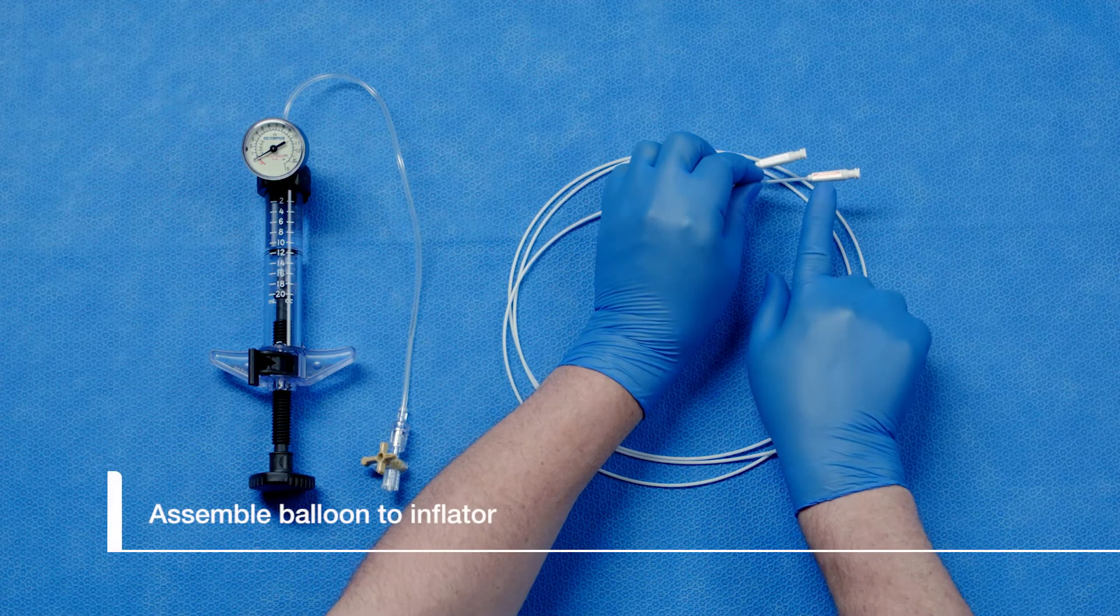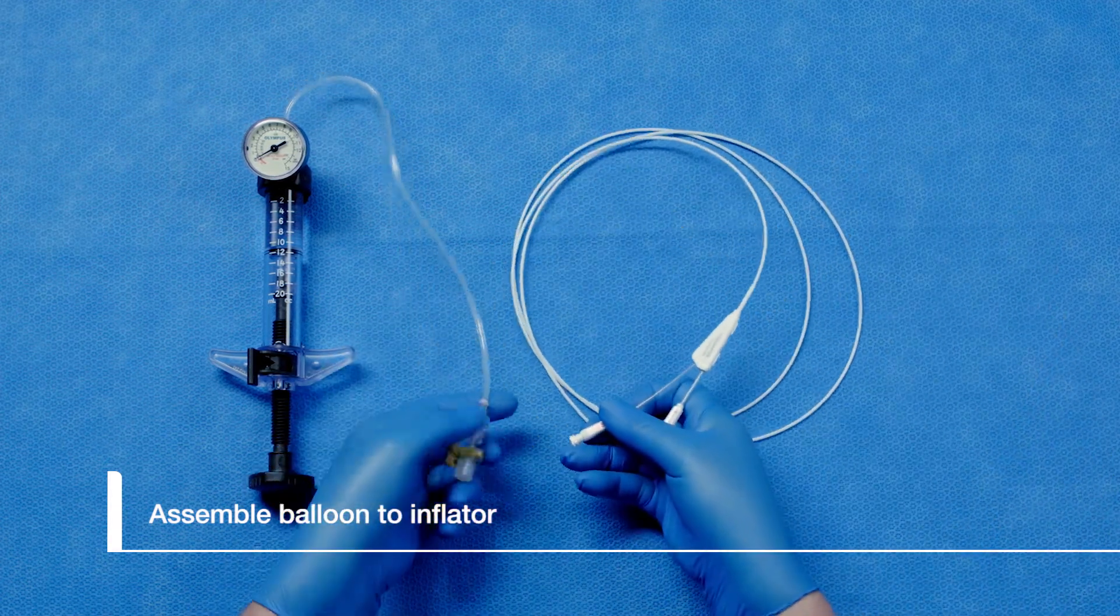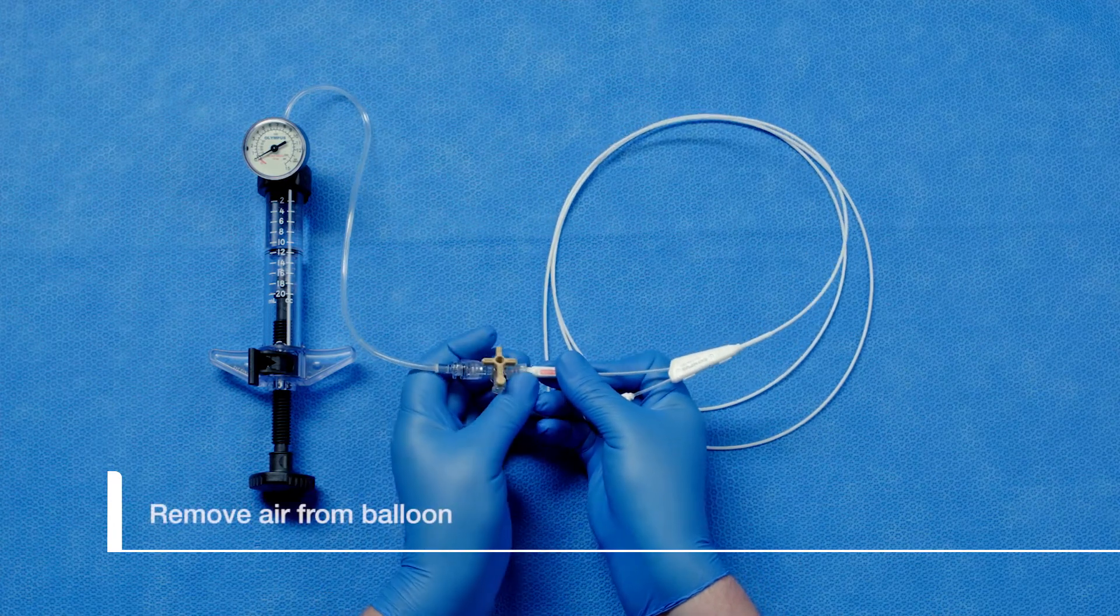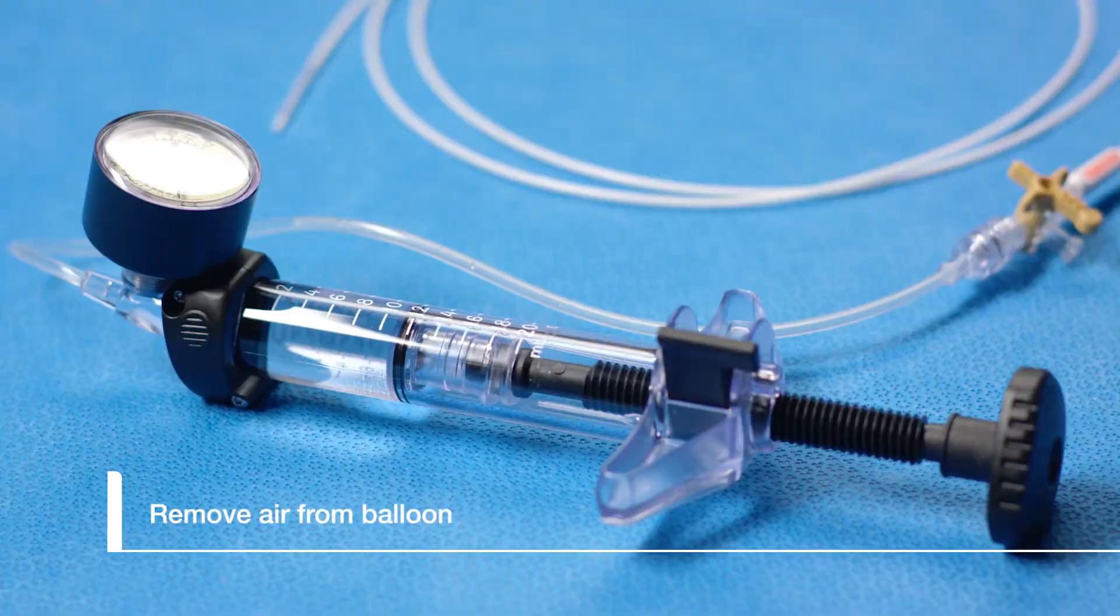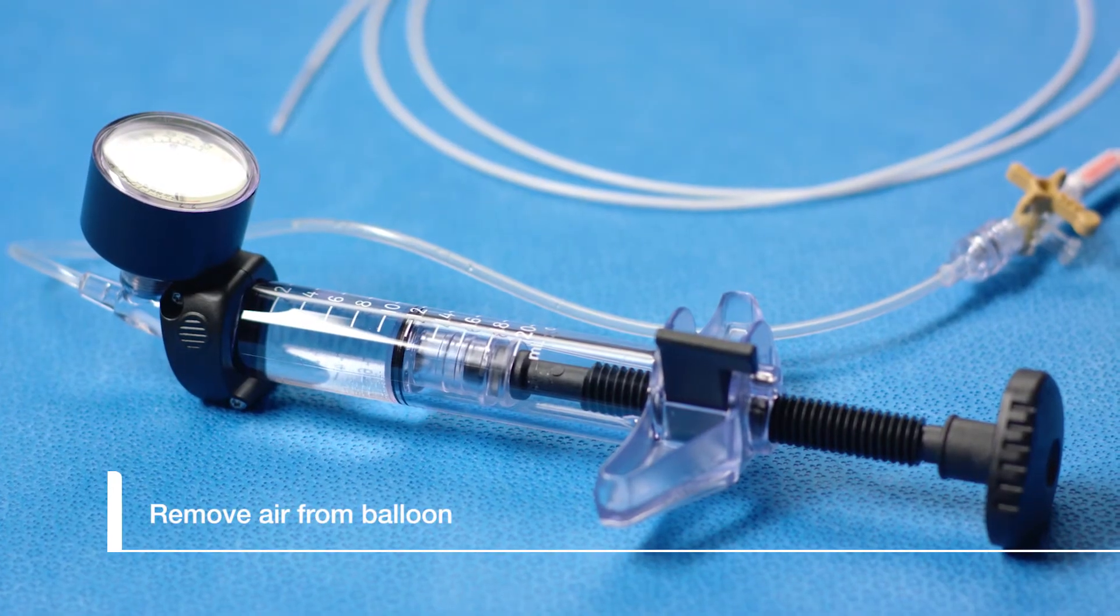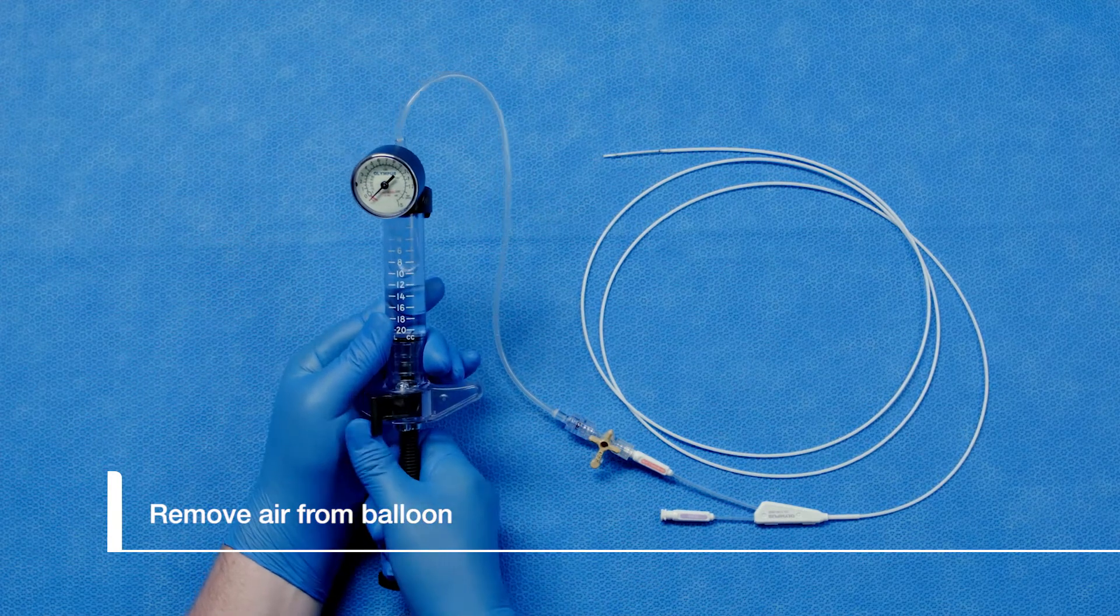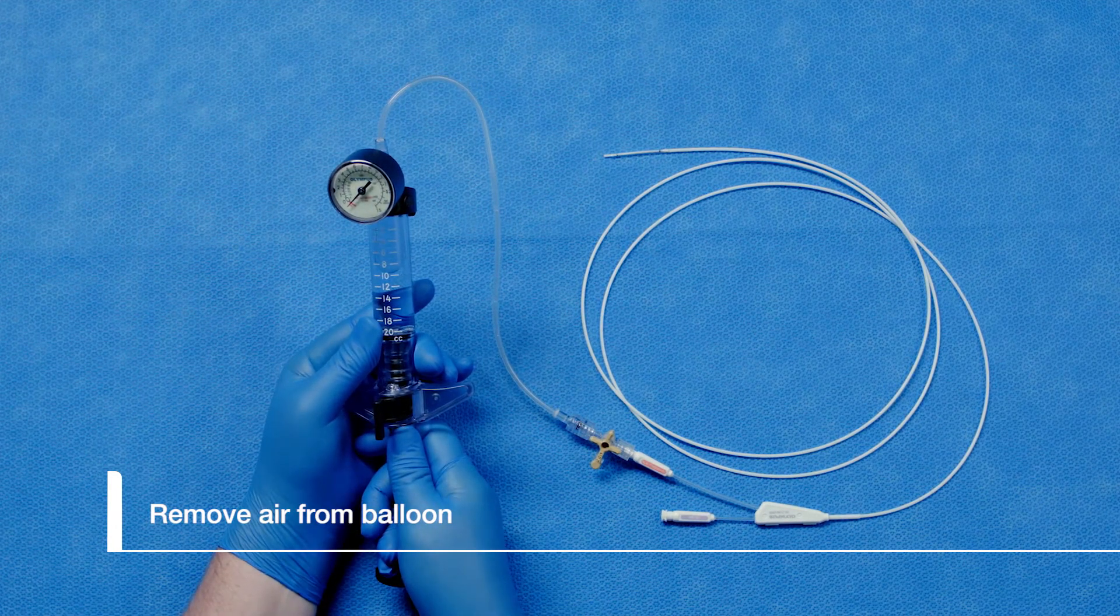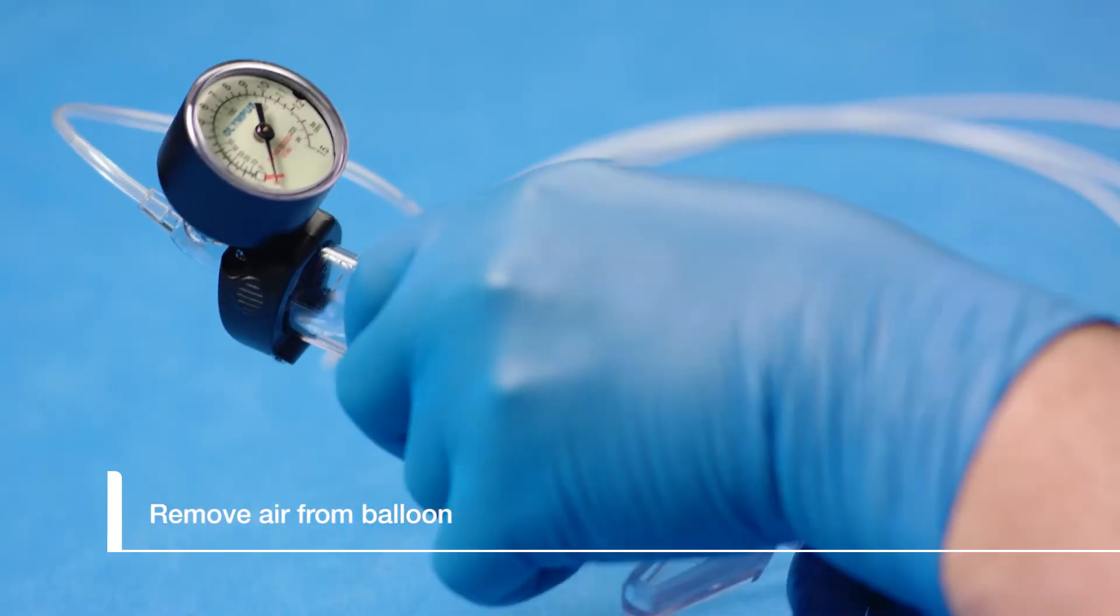Next, thread the balloon port on the balloon catheter to the inflator T-piece on the inflator catheter. In order to properly inflate the balloon, we need to remove all of the air from the balloon catheter. To do this, we will pull the plunger all the way back and lock the switch to the center position. Notice the air from the balloon has been drawn into the inflator.